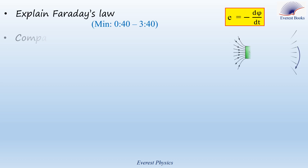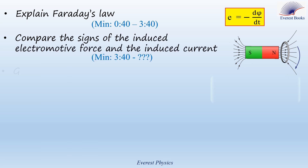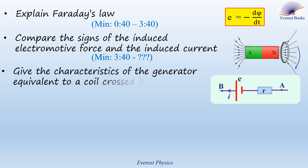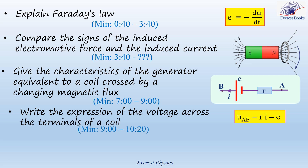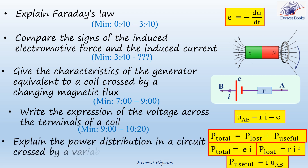In this video, we are going to explain Faraday's law, compare the signs of the induced electromotive force and the induced current, give the characteristics of the generator equivalent to a coil crossed by a changing magnetic flux, write the expression of the voltage across the terminals of a coil, and explain the power distribution in a coil crossed by a variable magnetic flux.